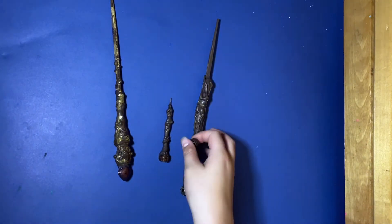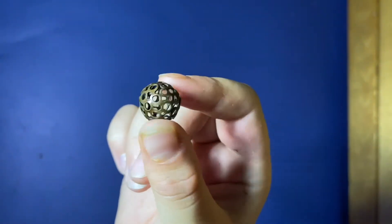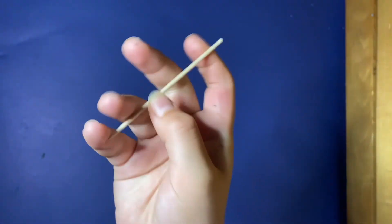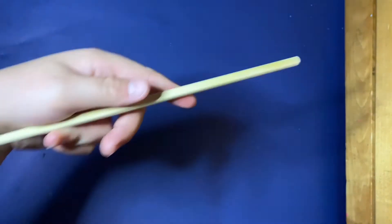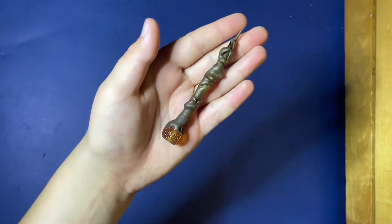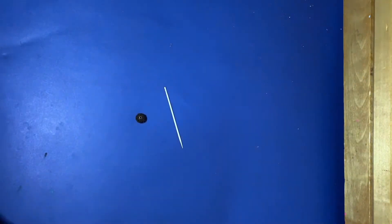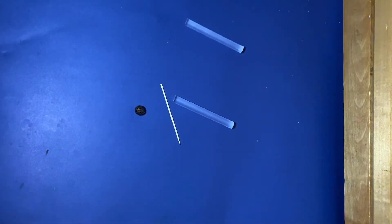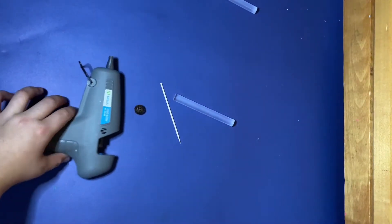What you will need is any bead of your choice, a toothpick, and if you want to make one of the bigger wands use a chopstick. But in this video I will just be showing you how to make the small wand. You will need hot glue sticks, probably not that much, and a hot glue gun.